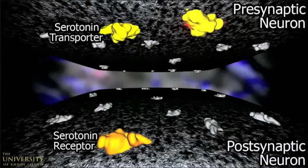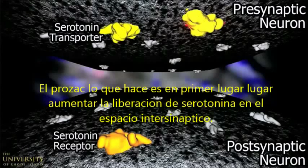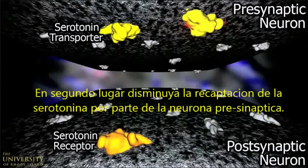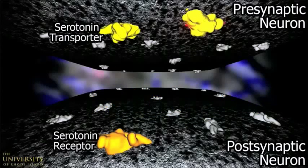This scene shows a presynaptic neuron on top, a postsynaptic neuron below, and the gap of synaptic space in between. The three proteins essential to serotonin's mechanism are shown in yellow, while the neuron's other proteins are rendered less prominently.